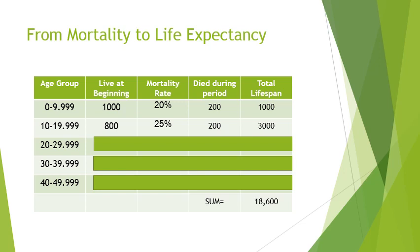So now we have 800 people alive in 2027, all aged exactly 10, because they were all born at the beginning of 2017. The mortality rate is 25 percent from the mortality table, so one-fourth of these people will die in this age bracket — that's 200 people. Using the midpoint, each of these 200 people lived for 15 years. So 15 times 200 gives 3000 person-years as the total lifespan for those who died in this age category.